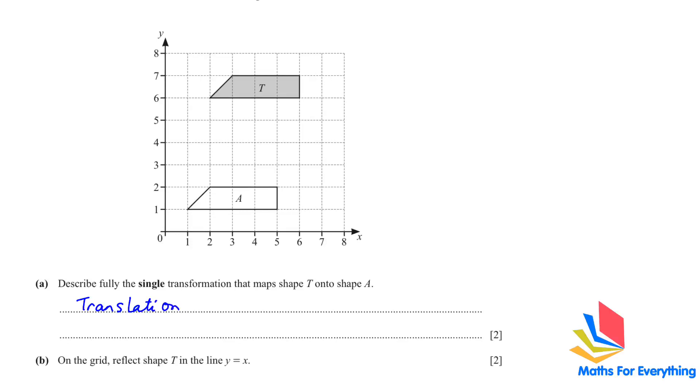And we have to find the column vector of the shape. This is the form of the column vector. The top number represents X and the down number Y. If your X is positive, it means you shifted to the right. And if your Y is positive, you shift up. If you shift left, your X is negative. And if you shift down, your Y is negative. Choose a point. So, I am choosing this point here. And we have to see how it reaches here.